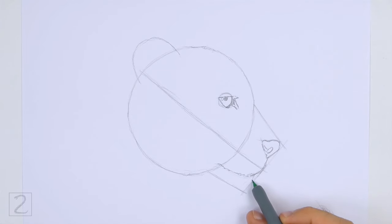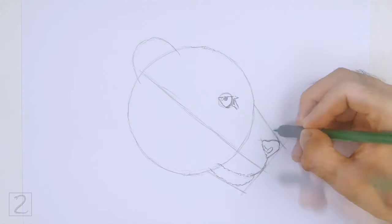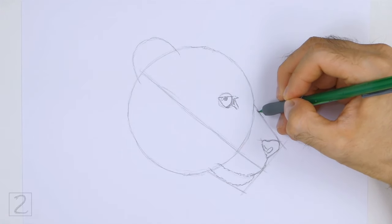Under the mouth, draw a curved line for the chin. Follow the path of the guide as you draw this line. Draw the line using short strokes for fur. Darken the top edge of the guide to finish the shape of the muzzle.